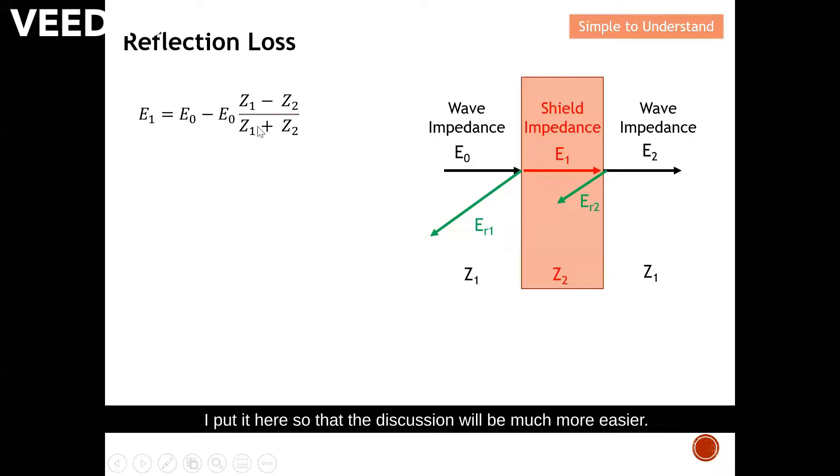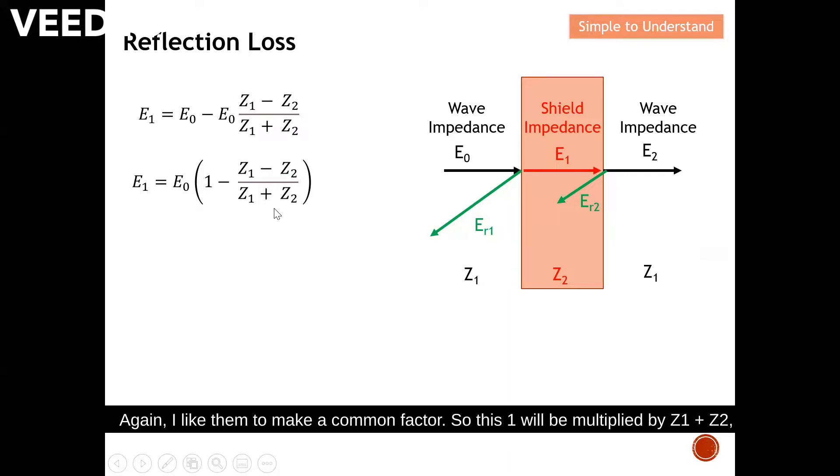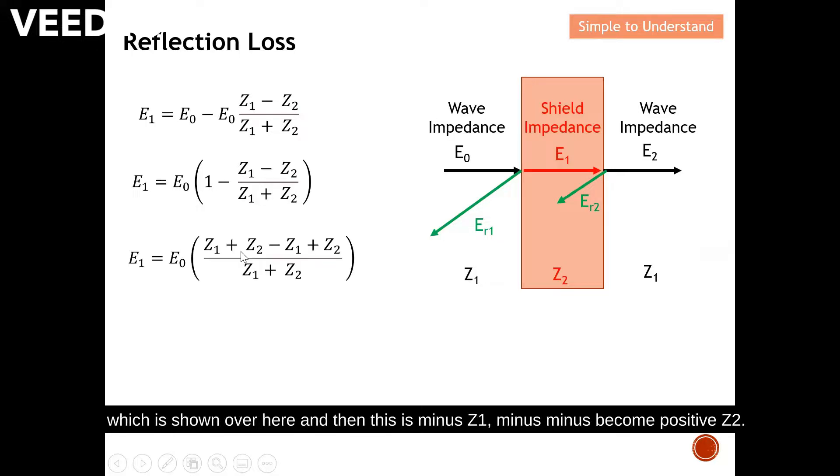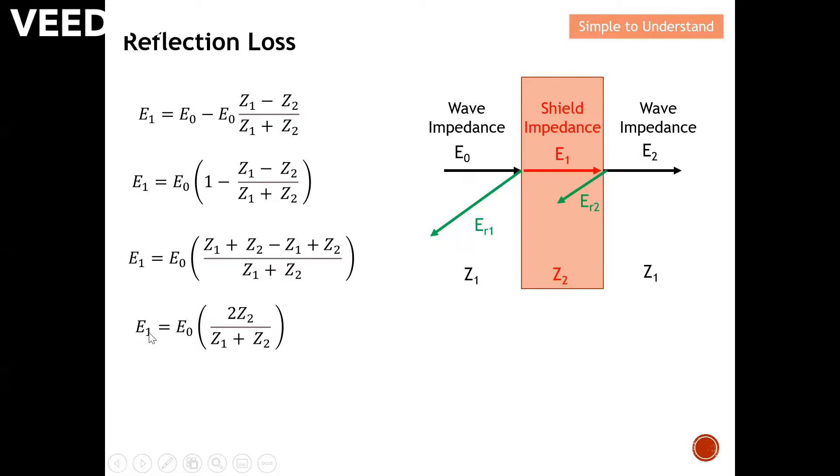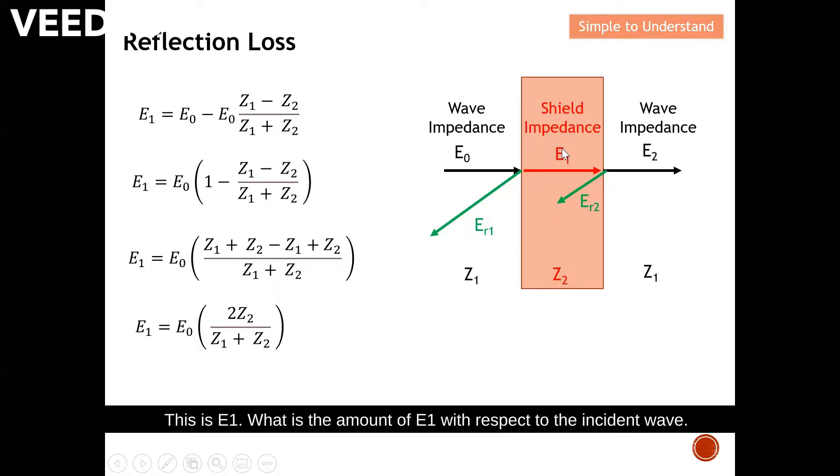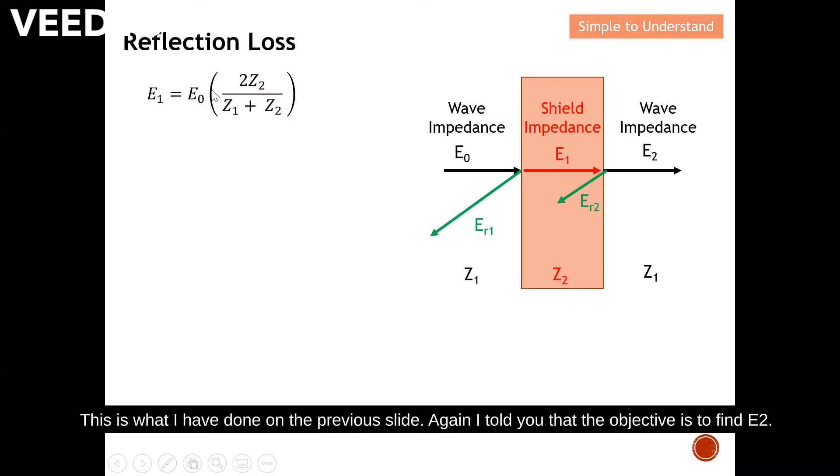I put it here so that the discussion will be much more easier. From this equation, I see a common factor of E0, so I take out E0, which results in this equation here. Again, I like to make a common factor. This one will be multiplied by Z1 plus Z2. And then this is minus Z1, minus minus becomes positive Z2. From here, I actually see that Z1 minus Z1, which cancels the Z1 effect. In result, this is the equation that I've obtained. This is E1. What is the amount of E1 with respect to the incident wave? This is the portion that able to penetrate through the first boundary.